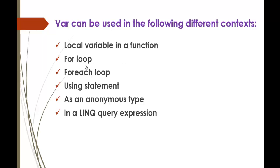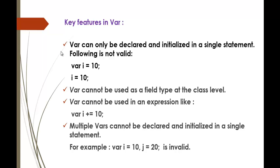var can be used in the following different contexts: local variable declaration, for loop, and especially in the foreach loop when iterating a collection. By default when you type foreach and tab twice, it gives the syntax: foreach var item in collection — there we are using var. It is also used in the using statement, as an anonymous type, and in LINQ query expressions.